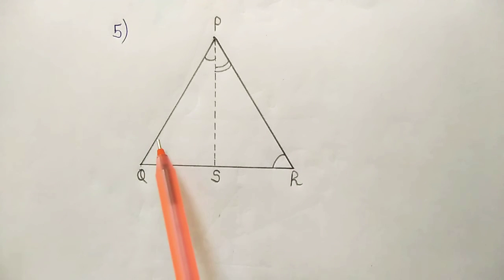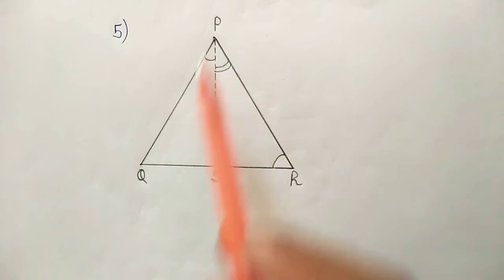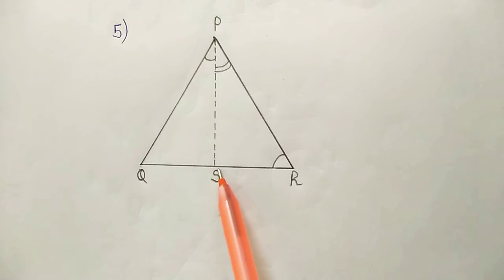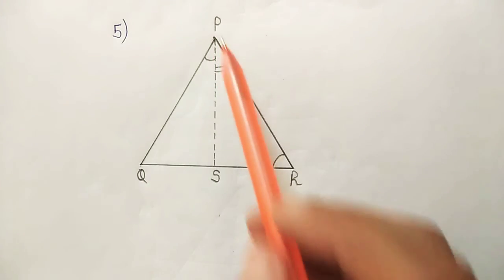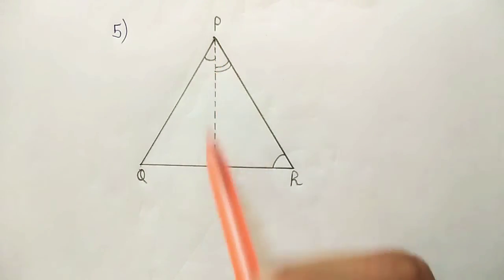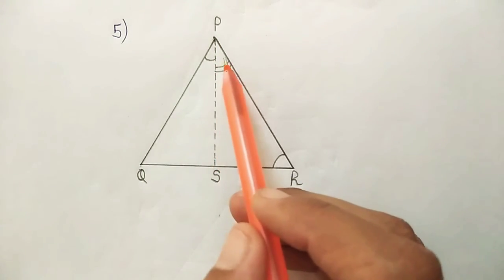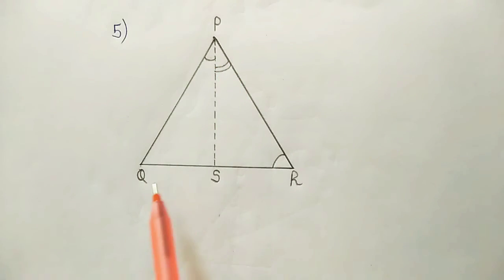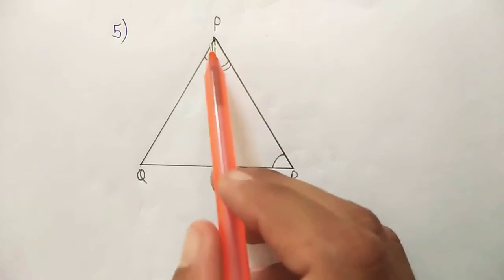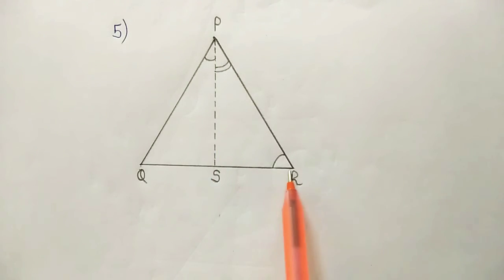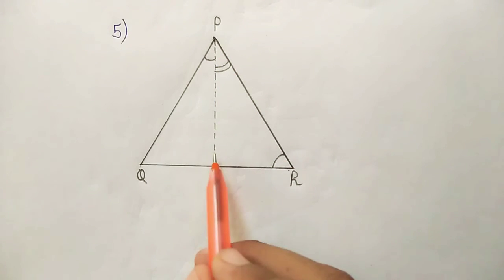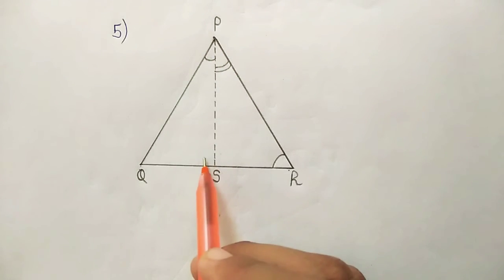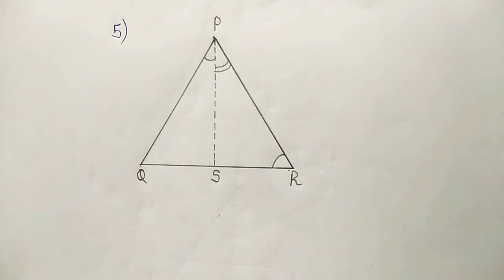PR is greater than PQ. PS is the bisector of angle QPR, which means PS bisects angle P. That means we will get two equal angles. We have to prove that angle PSR is greater than angle PSQ. Let us start proving.